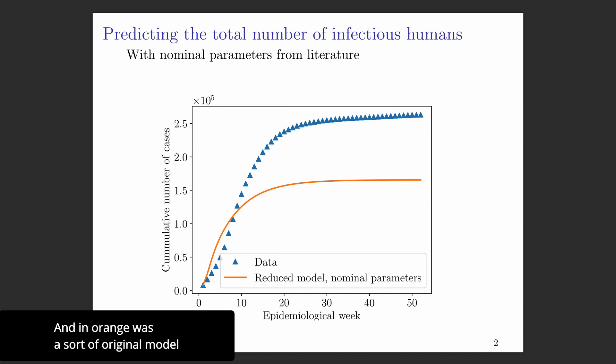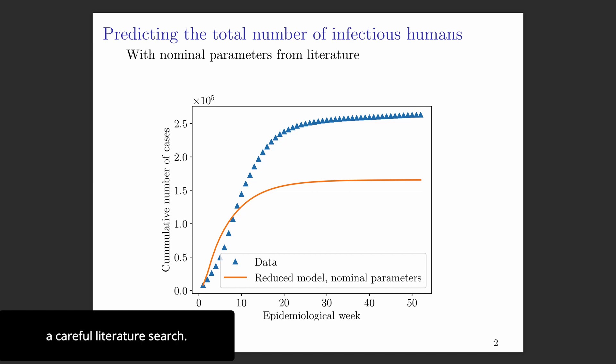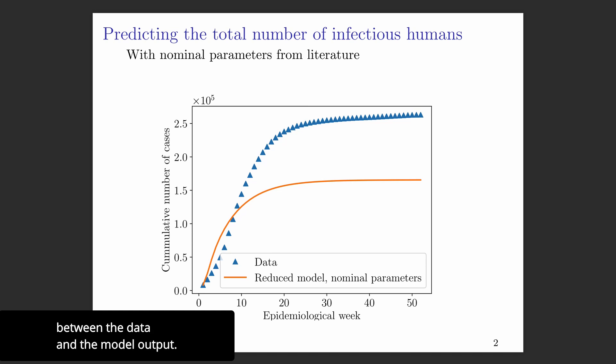In orange is a sort of original model with nominal parameters that they found through a careful literature search. And you can see there's a huge discrepancy between the data and the model output.